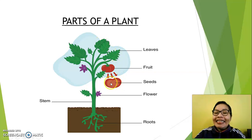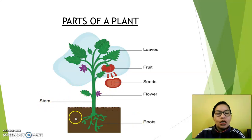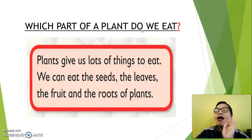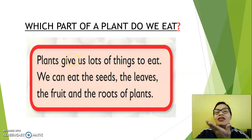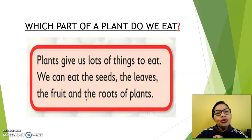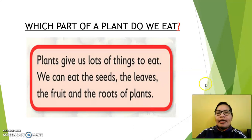And look at this part — it's underground — roots. One more time: leaves, fruit, seeds, flower, stem, roots. Let's continue. Which part of a plant do we eat? Yes, we eat some parts of a plant. Plants give us a lot of things to eat — we can eat seeds, leaves, fruit, and the roots of plants. Let's practice with some exercises.